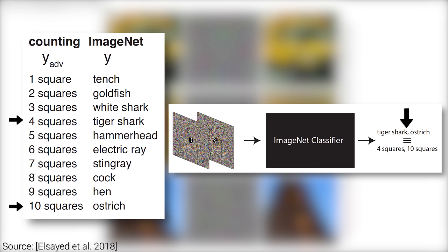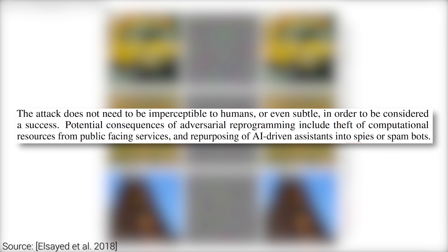As you can see, the attack is not subtle at all — but it doesn't need to be. Quoting the paper: 'The attack does not need to be imperceptible to humans, or even subtle, in order to be considered a success.' Potential consequences of adversarial reprogramming include theft of computational resources from public-facing services and repurposing of AI-driven assistants into spies or spambots.